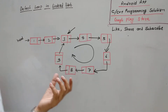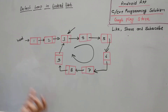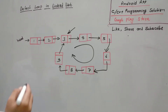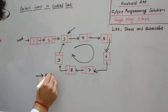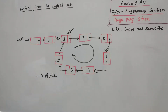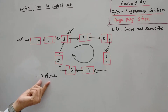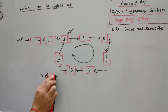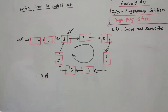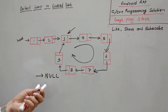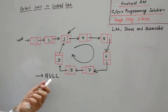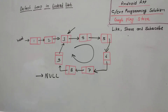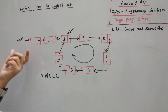First of all, let me explain how we can say whether there is any loop or not. If there is a linked list without a loop, that means we have a node at the end of the linked list which is pointing to null. If there is a loop, that means there is no node which is pointing to null. So you might think we can simply find whether a node with a null pointer exists or not.